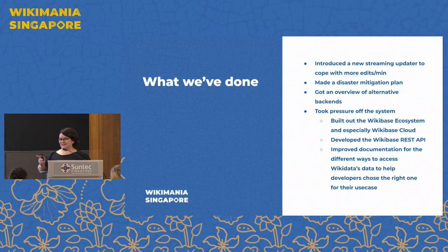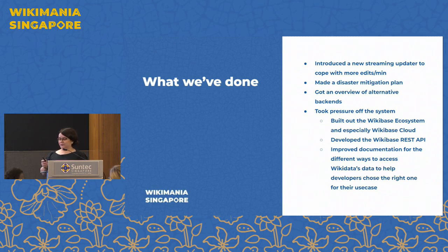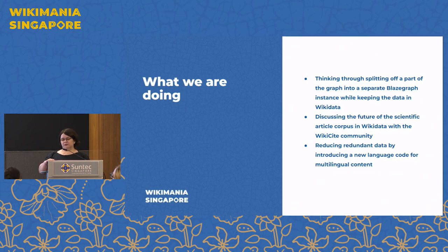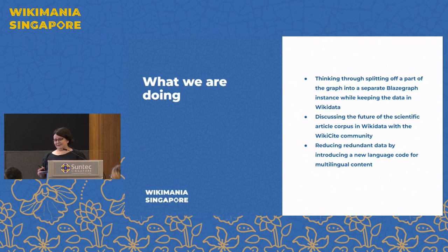If the REST API doesn't work for you yet, let us know. We've also improved the documentation to help people understand when they should be using which of those systems we have available. Currently, we are thinking through what it would mean to split off some parts of Wikidata into their own BlazeGraph instance — still keeping the data in Wikidata, but having a separate BlazeGraph instance that you would query via federation. There are a lot of things to think through, but that is something we're looking into.